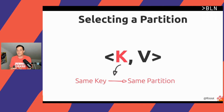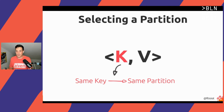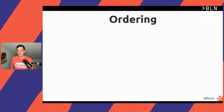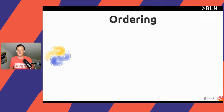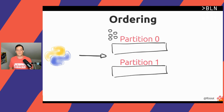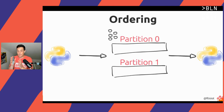You may want to think carefully about which partition you select when you send a message, because of ordering. For example, we have a producer in Python that produces data to a topic with two partitions, and we have our consumer. We have a really simple case with only three events: the blue event first, the yellow event second, and the red event third.